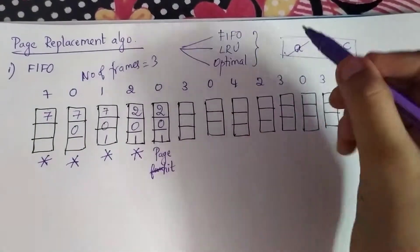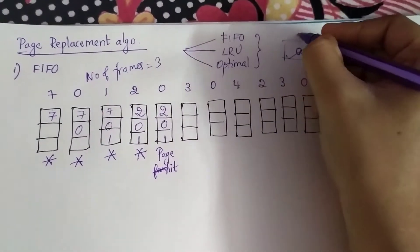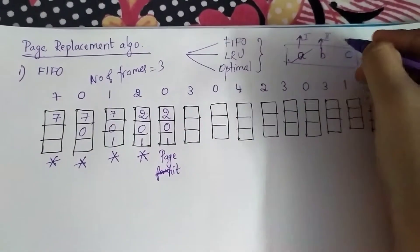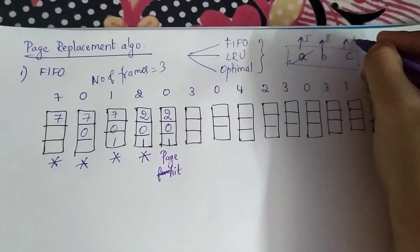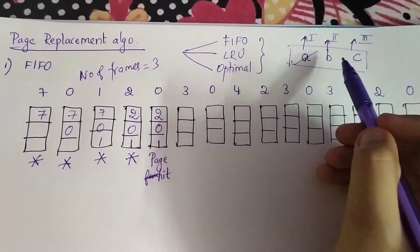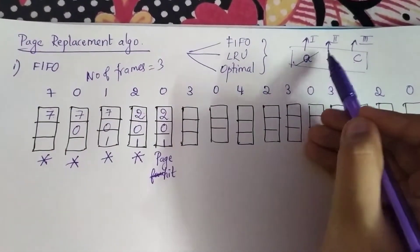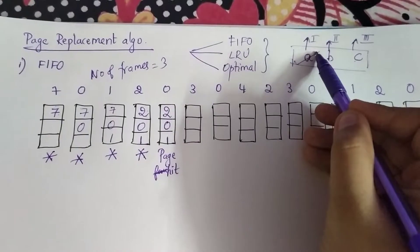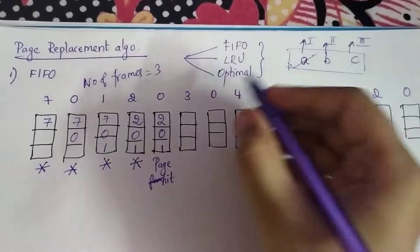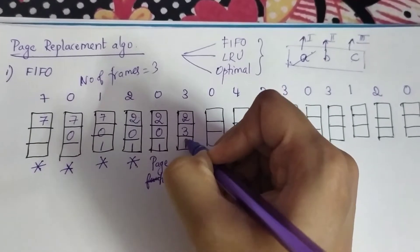Now you have three. A stands for the first block, B for the second block, and C for the third block. You add three in the second place because the first one is already ticked, so you tick the next one. It becomes two, three, one — and this is a page fault.